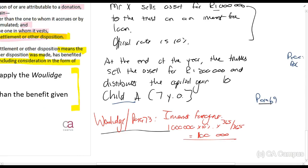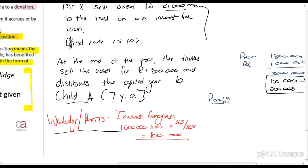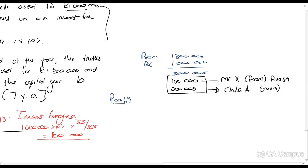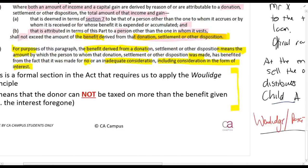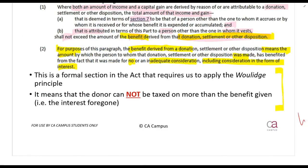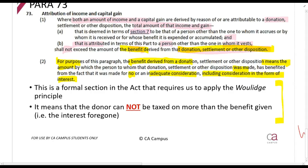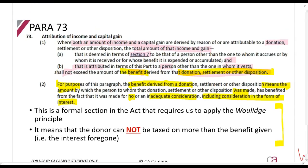Remember why this is the case — it's because he sells the asset for R1 million on an interest-free loan. Just as an example: if he had not sold it but instead fully donated the asset, how much would the benefit of the donation be? The full amount. If he had donated the asset, Mr. X the parent would have been taxed on the full R300,000. So there's only a Volach Principle adjustment where there was a sale and not enough interest was charged.